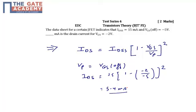In the problem, it is given that the data sheet of a certain JFET indicates that I_DSS is 15 mA, V_GS off is minus 5 V and we need to calculate the drain current for V_GS of minus 2 V.